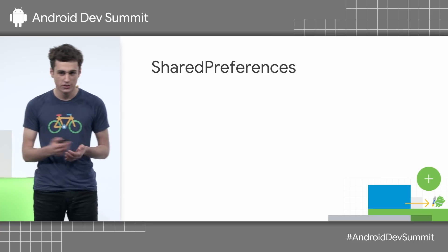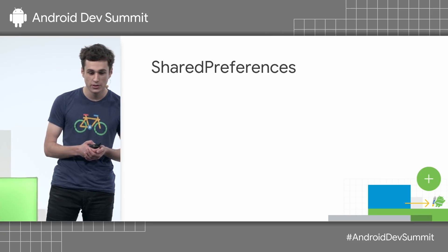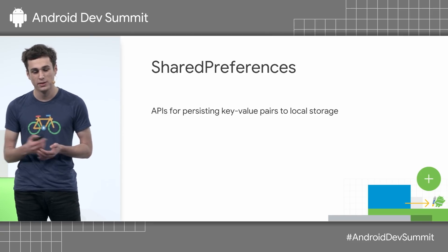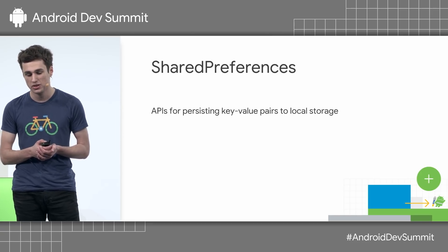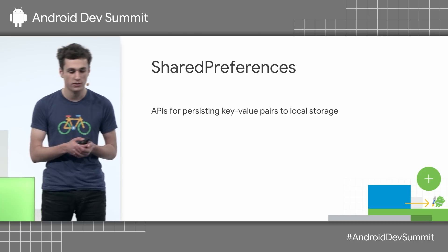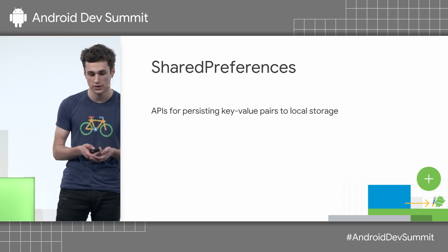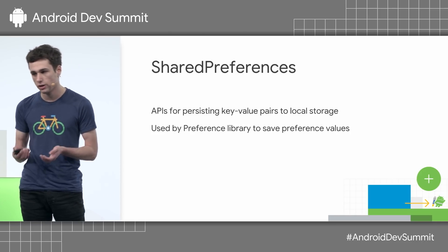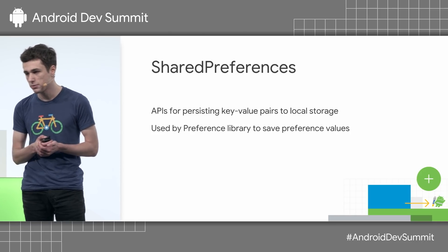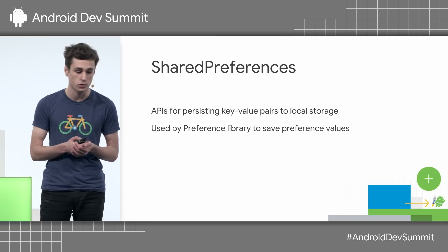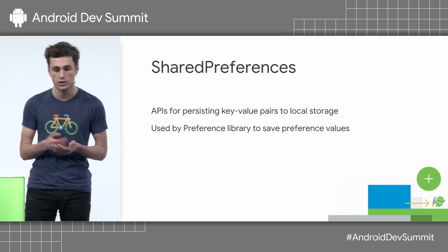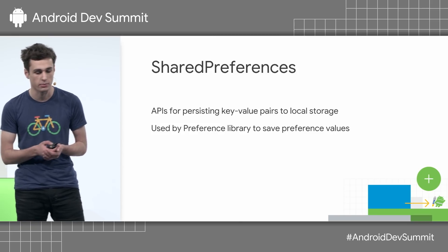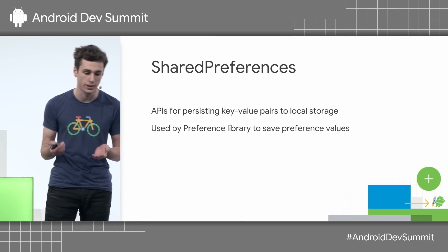And how does this all relate to shared preferences, you may be wondering? The shared preference APIs allow you to persist key-value pairs of data to the device. They're used internally by the preference library to save and retrieve any values that a user configures, but aren't actually part of the library itself, just a lower layer.